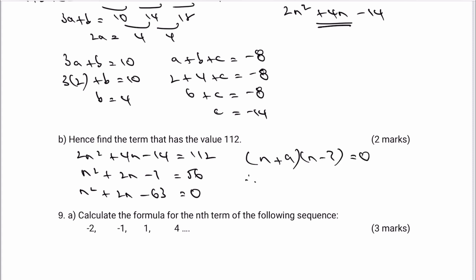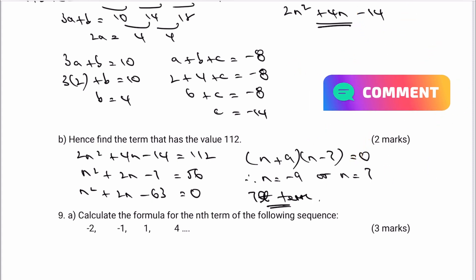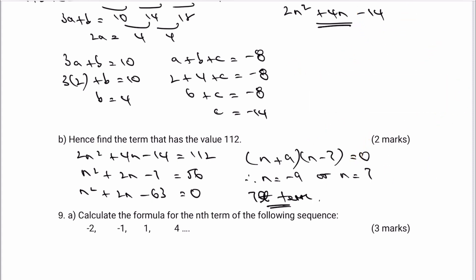So n equals minus 9 or n equals 7. It's n equals 7 that we're interested in because it's positive. So the term that has the value of 112 is the 7th term. If you're not sure about anything, please do add a comment and I'll try to give you some other playlists or videos to look at. This is the second part of this particular worksheet.